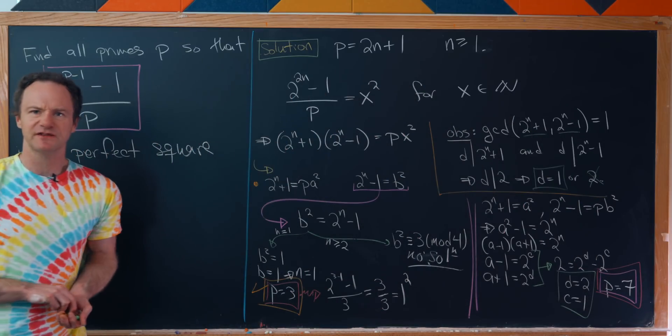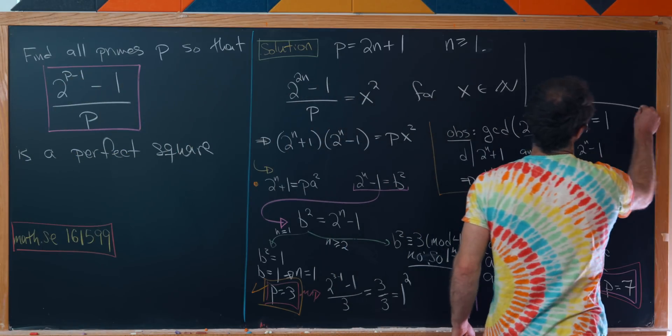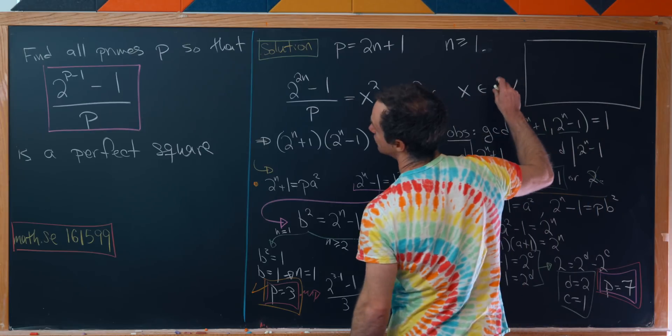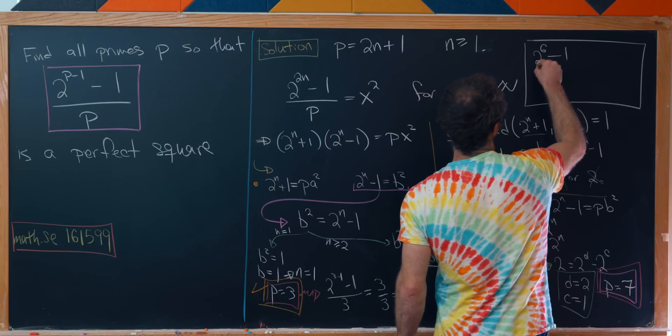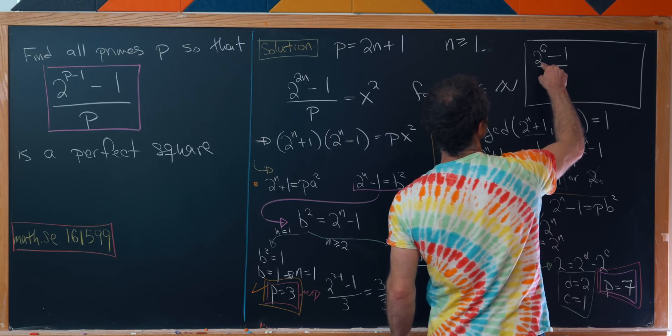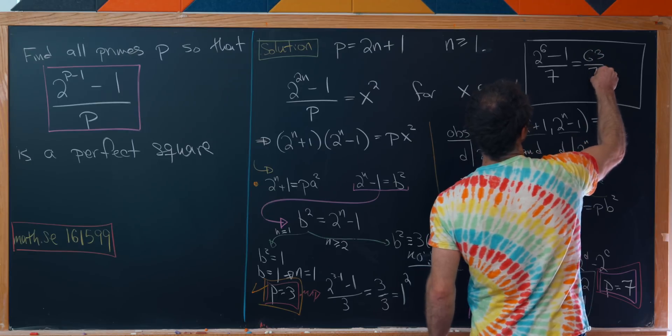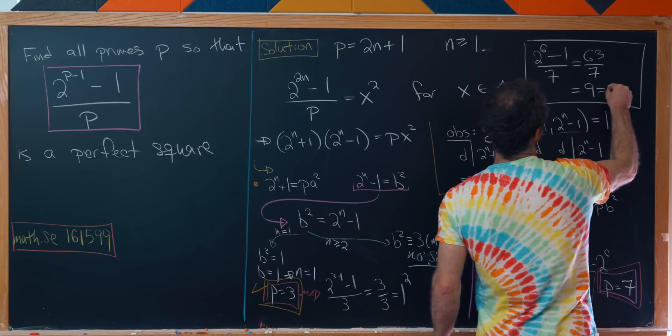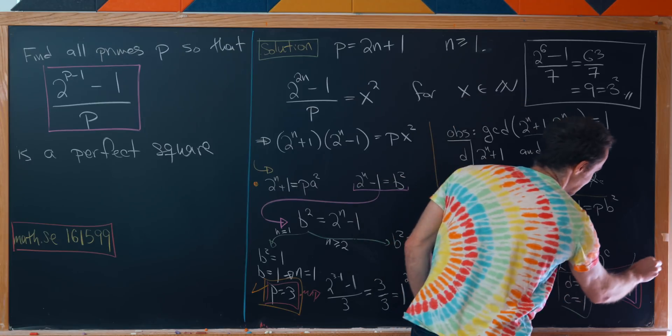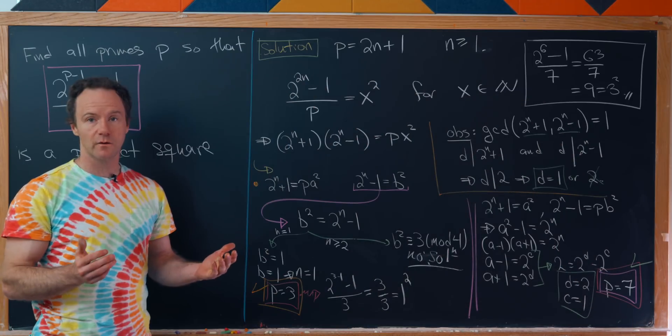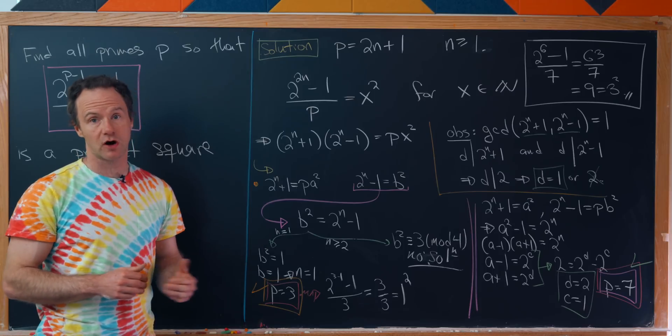Now we have to check that works as well. We'll have (2^6 - 1)/7. 2^6 is 64 minus 1 is 63 over 7, which is 9, which is 3 squared. So this is indeed another solution. Along the way, those are really the only choices that were left to us. So those are all of the solutions.